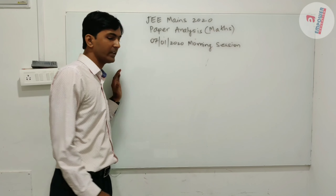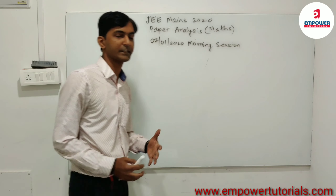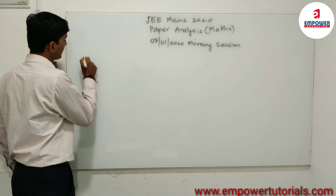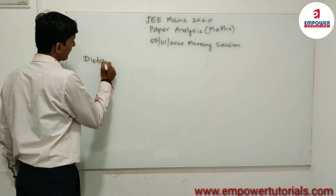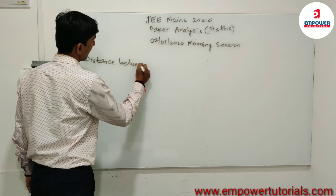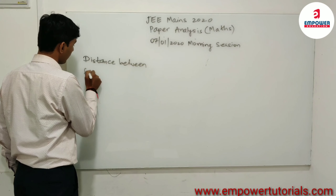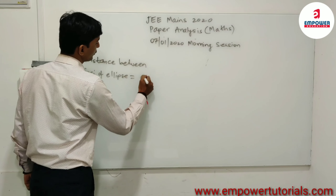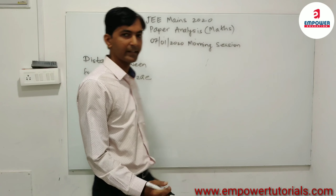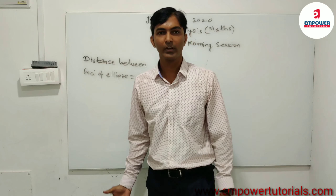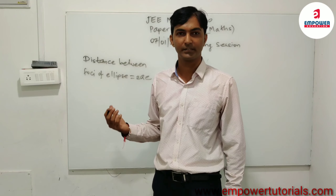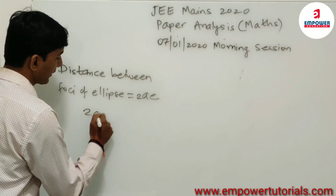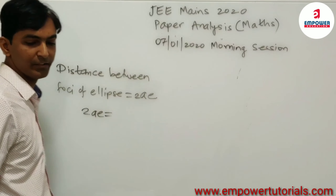What is given is that the distance between the foci of an ellipse is given. The distance between the foci of an ellipse is equal to 2Ae, where E is the eccentricity and A is the semi-major axis parameter. So it is given that 2Ae is equal to 6.